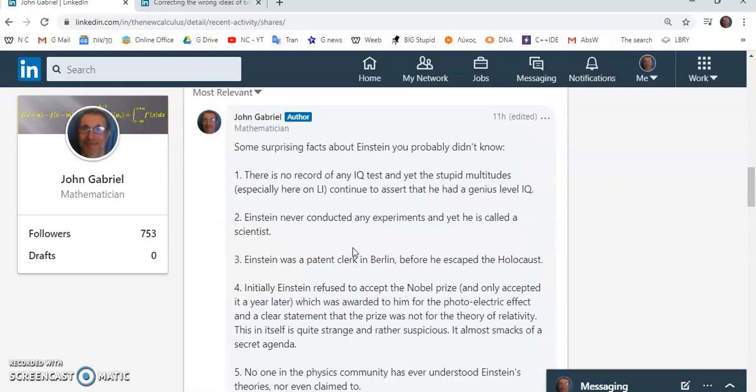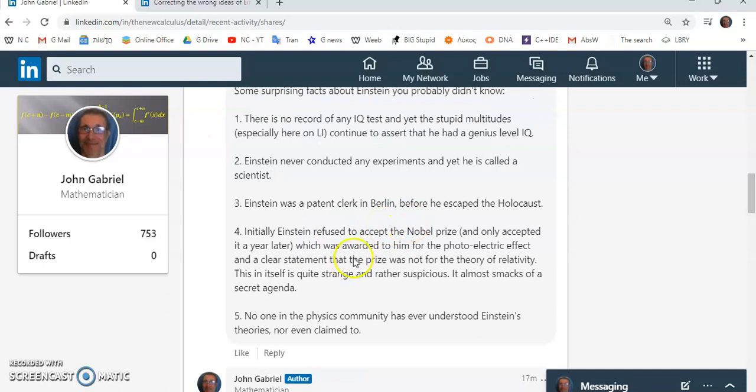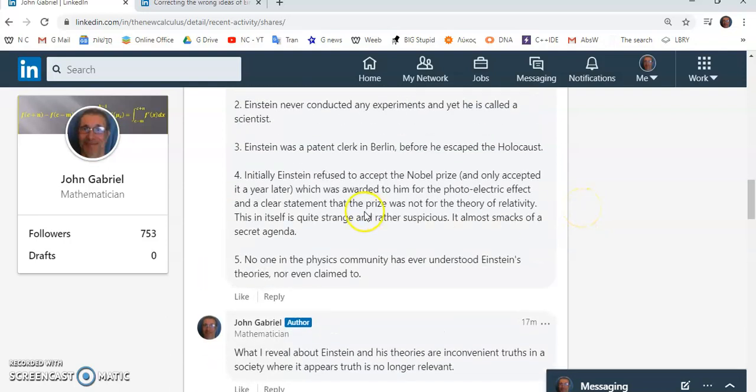Here are some surprising facts that you probably didn't know. There is no record anywhere of any IQ test, and yet the multitudes of humans have been convinced that Einstein had a genius level IQ. Einstein never conducted any experiments, and yet he's called a scientist. He was a patent clerk in Berlin before he escaped the Holocaust, so he had access to a lot of ideas, including some of the very ideas he talks about in his theory of relativity. Initially, he refused to accept the Nobel Prize, which was awarded to him for the photoelectric effect, not the theory of relativity. And a clear statement was made by the Nobel Committee that it was not for the theory of relativity.